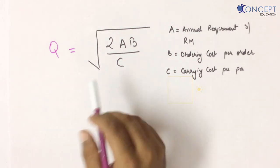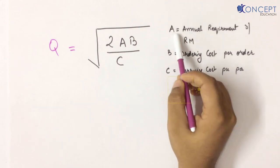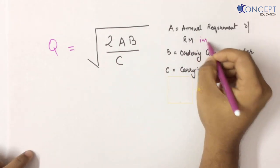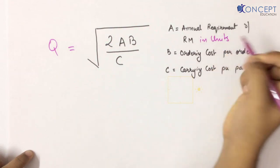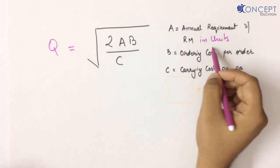The formula was under the root 2AB by C, where A is the annual requirement of raw material in units. Not raw material requirement in rupees, but in units.